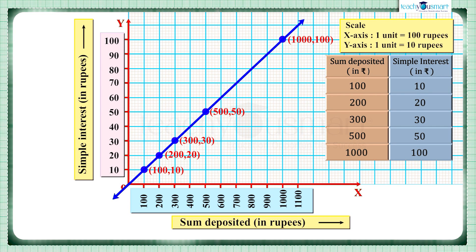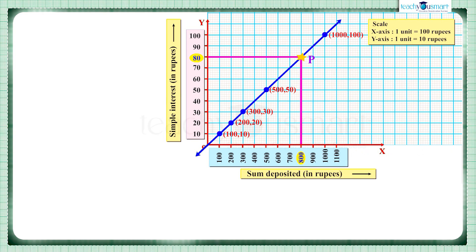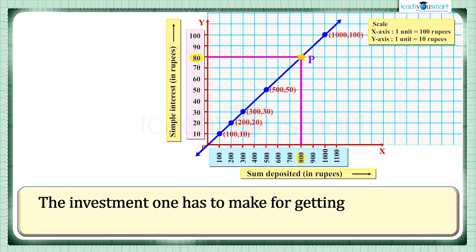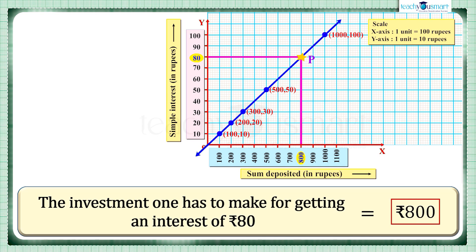We also have to find the investment for which one has to get an interest of 80 rupees. For that, locate 80 on the y-axis and draw a horizontal line to the graph such that it meets at point P. From P, draw a vertical line to the x-axis, and the meeting point will give us the answer. That is, the investment one has to make for getting an interest of 80 rupees equals 800 rupees.